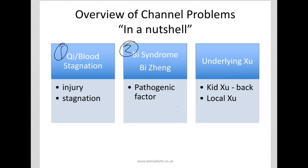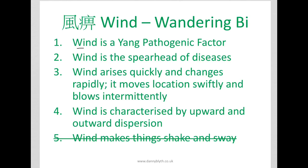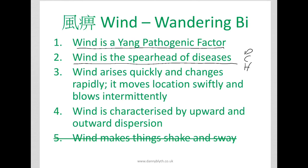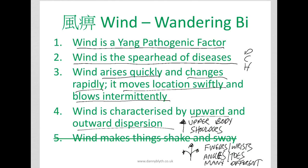The second thing to look at is Bi syndrome or pathogenic factors. Wind is a yang pathogenic factor and things associated with it are usually acute and sudden. It's the spearhead of diseases — damp, cold, and heat often get in on the back of wind. It tends to give acute and sudden problems, such as viral arthritis where there's joint pains with chills and fever — these are things that should be seen by a GP and not just by acupuncturists. Wind rises quickly, changes rapidly, moves locations swiftly, and blows intermittently. These are typical joint problems that move around the body, characterised by upward and outward dispersion — so the upper body and shoulders are often affected, and fingers, wrists, ankles, toes, or many different joints as you see in rheumatoid arthritis.